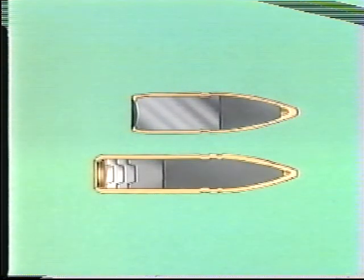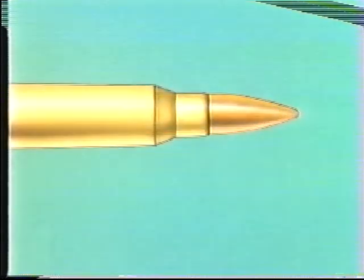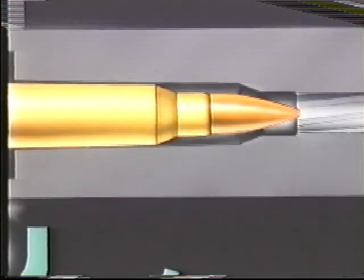The tracer bullet is four and a half millimeters longer than the ball bullet to accommodate the tracer composition. The bullet is slightly bigger than the bore, providing forward obturation.